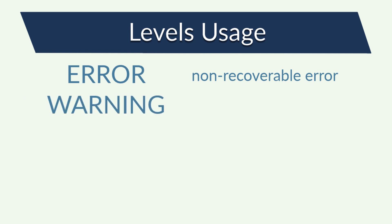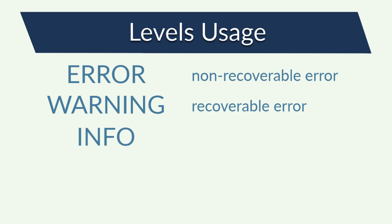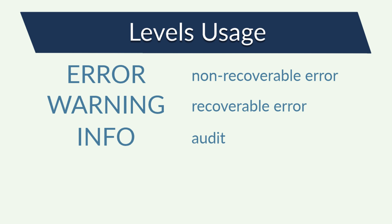The warning also informs me about an error, but my application can continue with some workaround. I may have some natural problems with my external service, but I have some old values in the cache. I can answer the user's request — maybe not the best way, but I can do something. The info level is there to audit some user behavior, like when a user logs in, changes a configuration, or tries to upload an invalid file. This last example may also be included in the warning level.